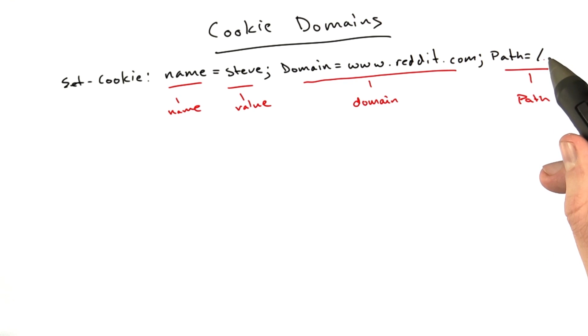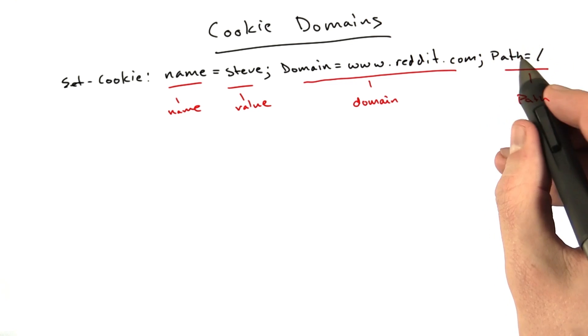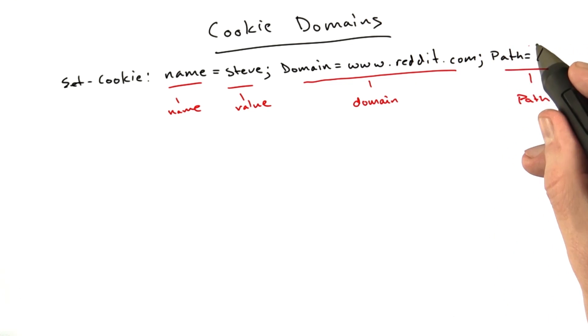And this is the path that it's relevant to. The path is easier to explain. Basically, you can put whatever you want here. In this case, this is the default path. If you don't specify a path, we just assume you mean slash.